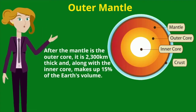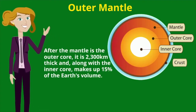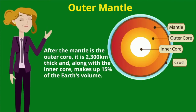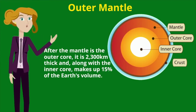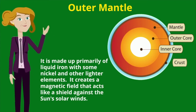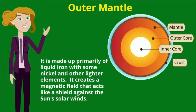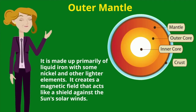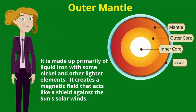After the mantle is the outer core. It is 2,300 kilometers thick and, along with the inner core, makes up 15% of the earth's volume. It is made up primarily of liquid iron, with some nickel and other lighter elements. It creates a magnetic field, which acts like a shield against the sun's solar winds.